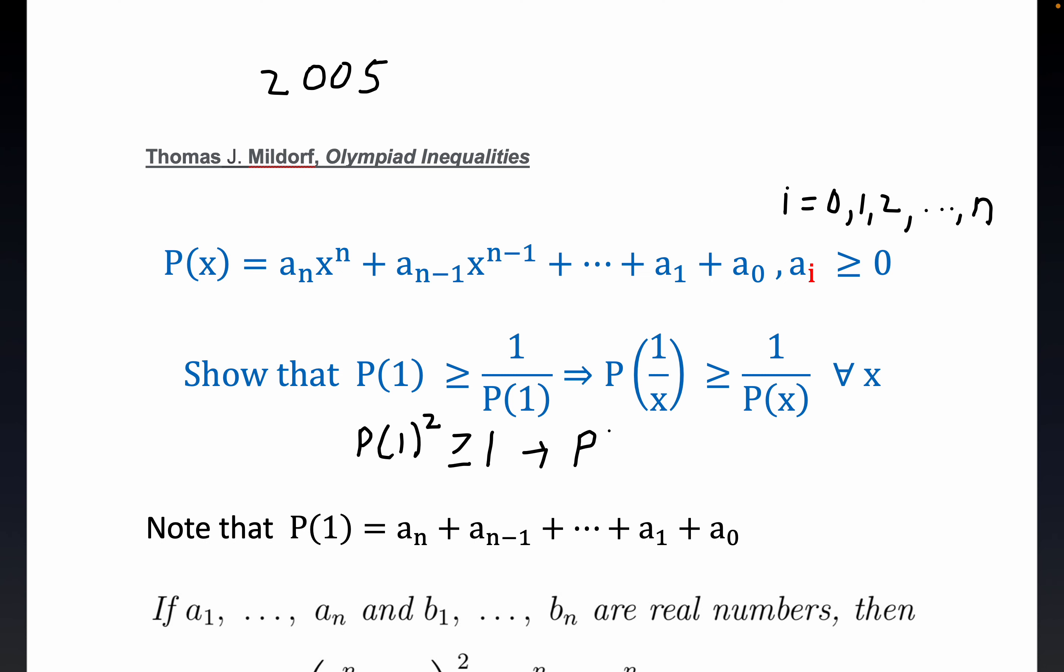So P evaluated at 1, I probably spent too much time on that. But in any event, we do know that P evaluated at 1 is greater than or equal to 1. Now also trivially, P at 1 is just the sum of these non-negative coefficients. If you substitute 1 everywhere you see an x, you just get that P of 1 is equal to the sum of the coefficients.